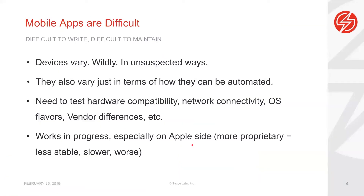I started as a manual tester and now I help clients all over the world implement test automation and make it as efficient as possible — whether it's UI, mobile, unit testing, or API testing. Talking about mobile apps: mobile apps are very difficult for anyone that's done web testing or web automation. When we transition to mobile automation, it is way more complicated simply because there are so many devices and so many different problems that can occur.